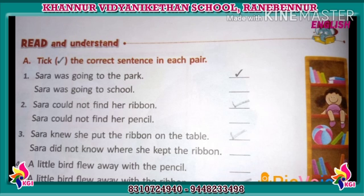The fourth option: A little bird flew away with a pencil, or a little bird flew away with a ribbon. Which sentence is correct, children? A little bird flew away with a ribbon is the correct sentence. Tick it.